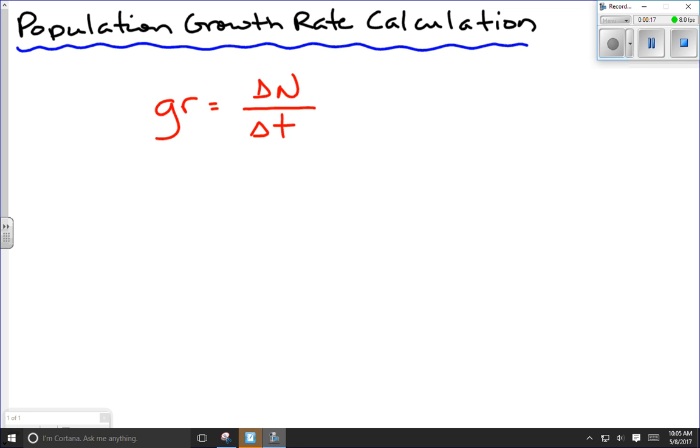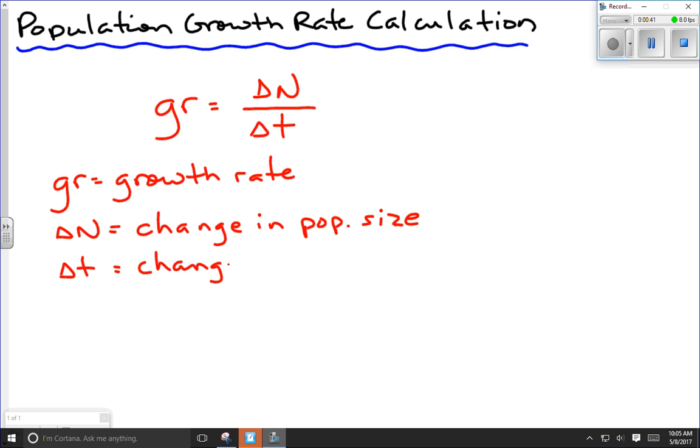So gr equals growth rate, delta N is change in population size, and delta T is the time frame, change in time.